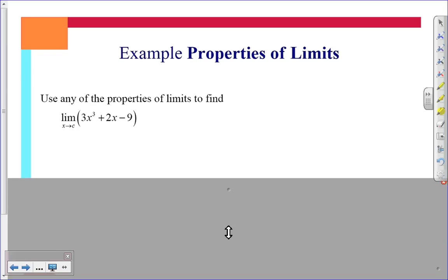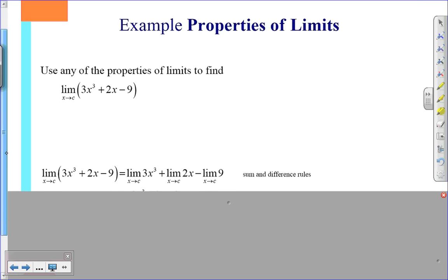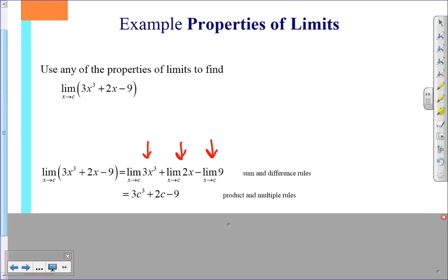So our first example, the limit of the function 3x cubed plus 2x minus 9 as x approaches c. Well, first of all, I'm going to use my sum and difference rules. And I'm going to break it apart into pieces. So this is 3x cubed, 2x, 9. And as x approaches c. And now we're going to use the product and the multiply rules. Where you can see here that since it's the function x, we replace x with c. The function 2x, we replace x with c. And any time a limit approaches a constant, it is just that constant. So there we have the limit of this function. Do you remember it now? Does it make sense?